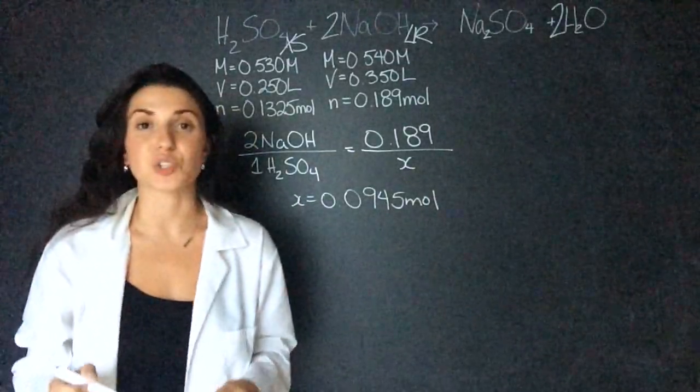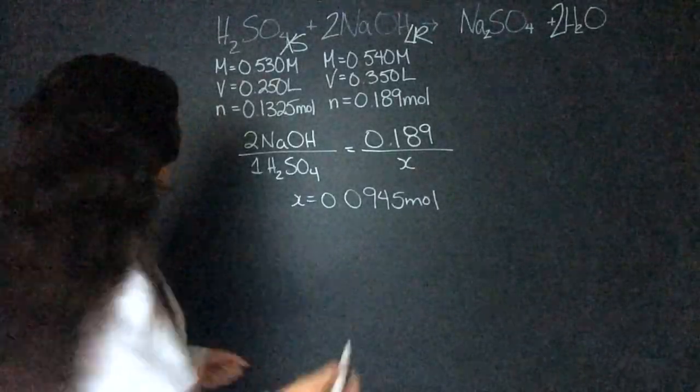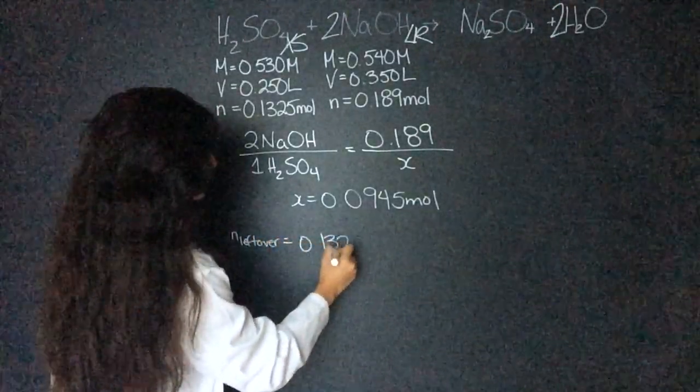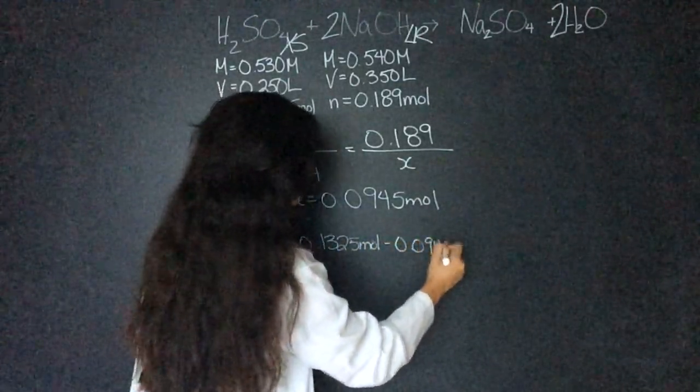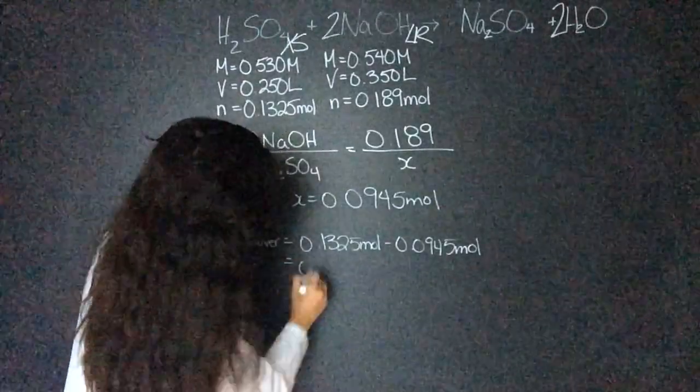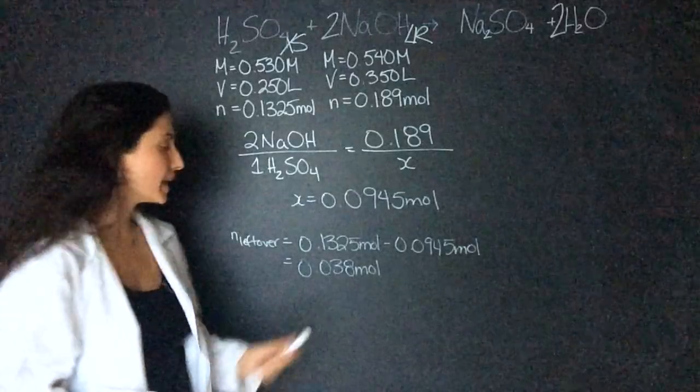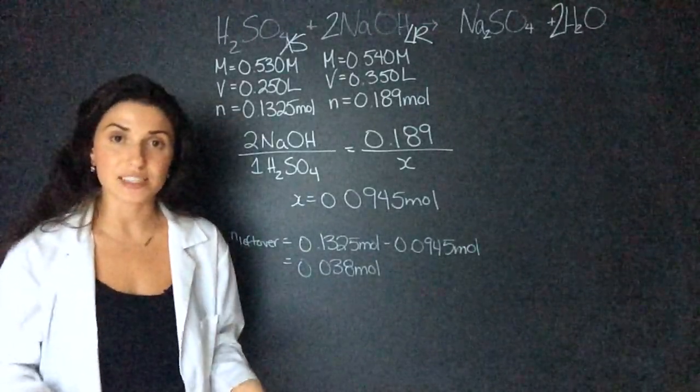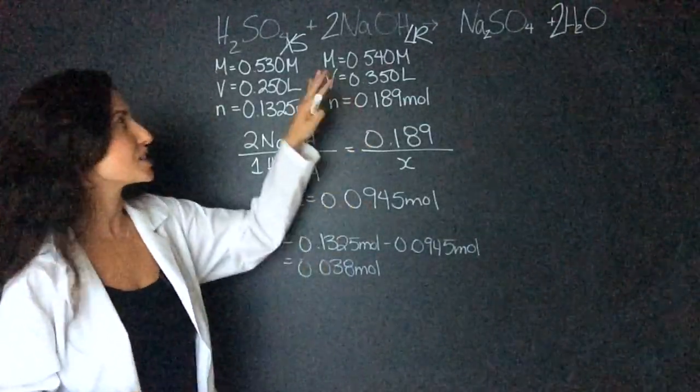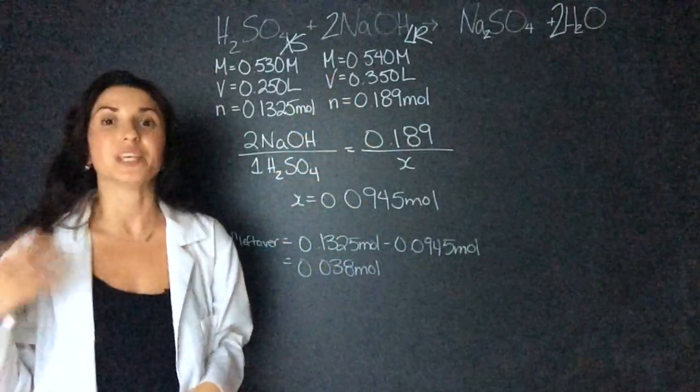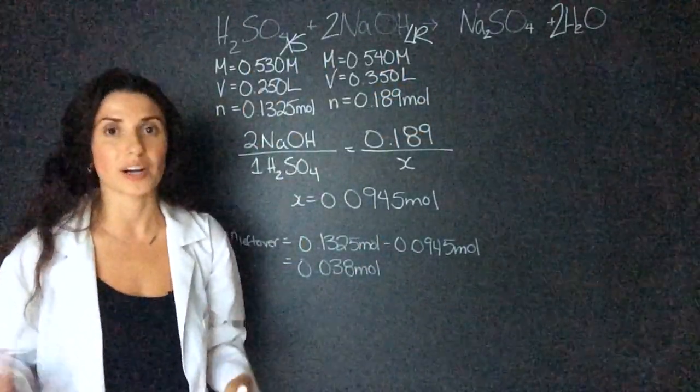So that's how much is going to react. Now I'll figure out how much is going to be left over by simply subtracting. I start with 0.1325 moles and I'm using 0.0945 moles. I'll be left with 0.038 moles. Now this tells me how much sulfuric acid is left in the solution once the reaction is completed. All of the limiting reagent which is the sodium hydroxide will be used up and there will be the salt, water and now H2SO4 in the solution.